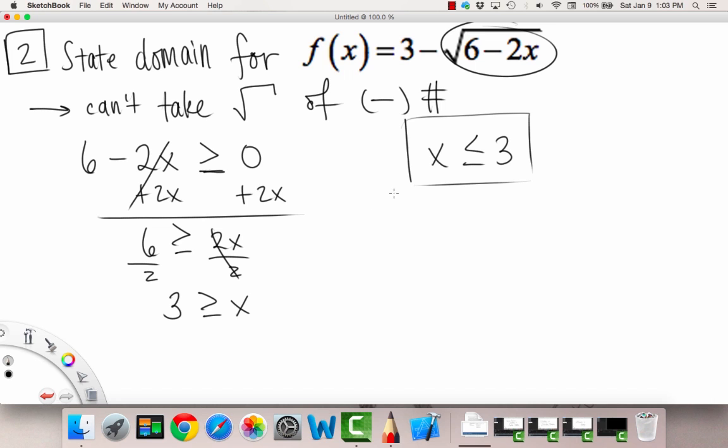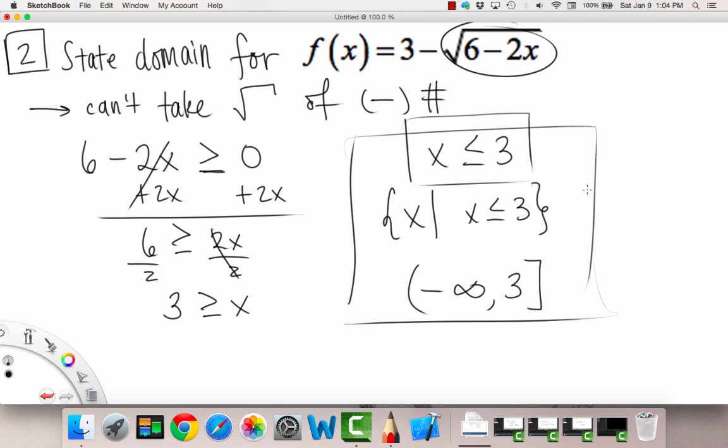In set builder notation, this would be x, curly bracket, or curly brace, x vertical line, x ≤ 3. That's another way, this is our set builder. And the final way is using interval notation, and that would give us, so x ≤ 3, so 3 is our upper bound, inclusive. And then on the left side, we have anything lower, so that means negative infinity and a rounded brace there. So any of these would work to state the domain for our given function.